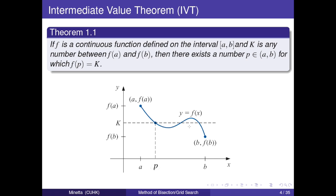To know it clearly, we need to know two theorems. First is intermediate value theorem. We see in this picture, if f is a continuous function defined on interval [a, b] and k is any number between f(a) and f(b), then there exists a number p in interval [a, b] for which f(p) equals k.